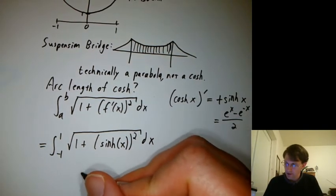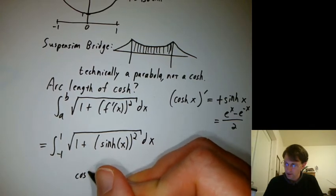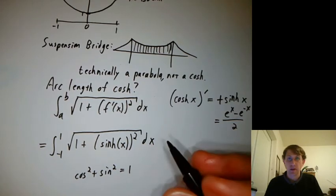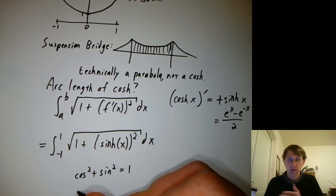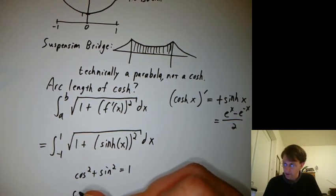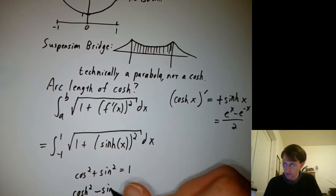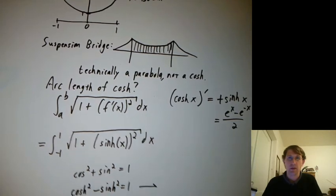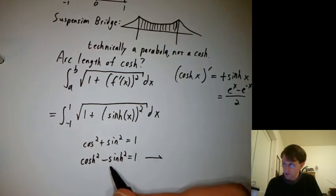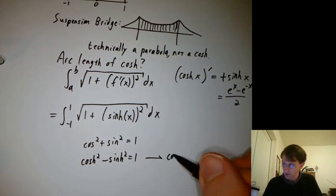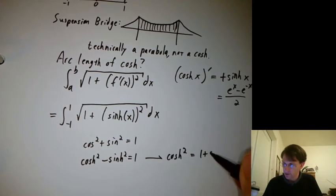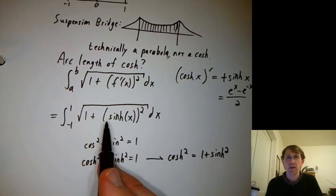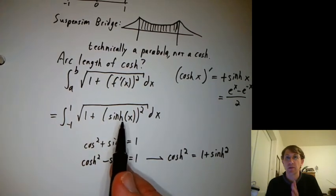Well, do you remember there's an identity like cosine squared plus sine squared equals 1? There's a similar identity for hyperbolic cosine and sine stuff. And that is cosh squared minus sinh squared equals 1. Which means that if you move the sinh squared over, you get cosh squared equals 1 plus sinh squared. And oh, look at that. We've got a 1 plus sinh squared just waiting there for us.